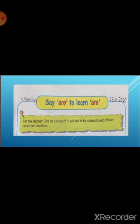Say: are. To learn: are. Children, you are familiar with the concept of 'is' and 'are', and you know that 'is' is used with a single object or person, and 'are' is used with more than one object or person. Today again you will learn about 'is' and 'are' with the help of this lesson. Let's start reading.